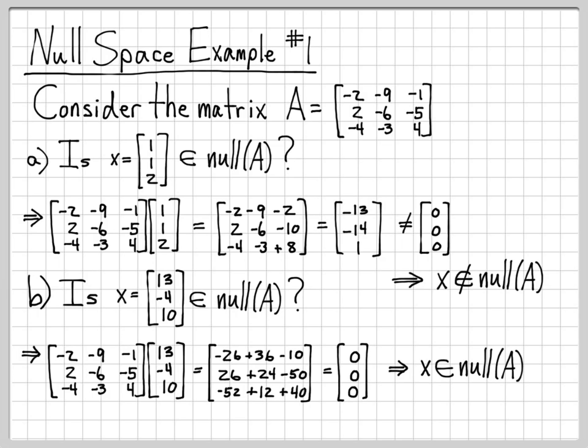So that's the end of this example. We now know how to check if for a given matrix and for a given vector, if the vector is in the null space, and all you have to do is multiply A times x. If you don't get the all-zero vector, it is not in the null space. And if you get the all-zero vector, it is in the null space. And as always, these are the numbers. Thank you.